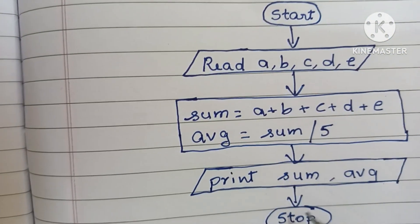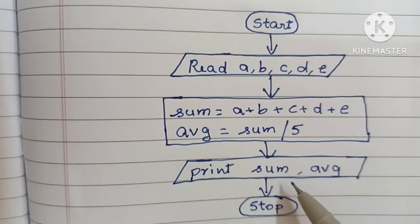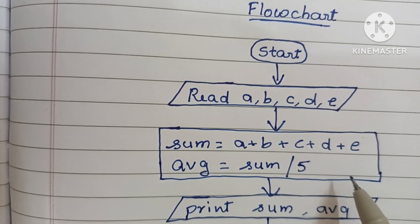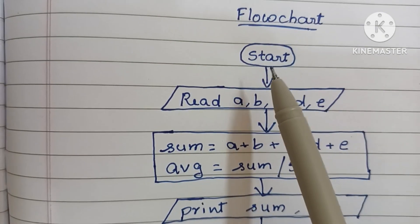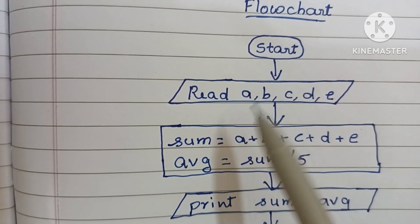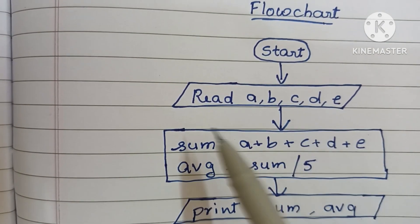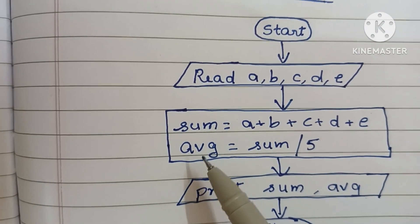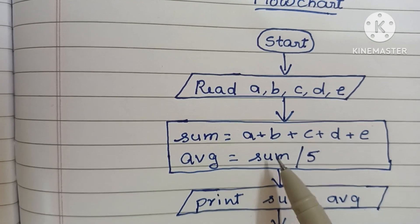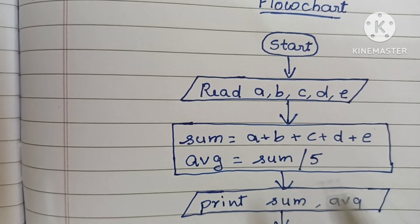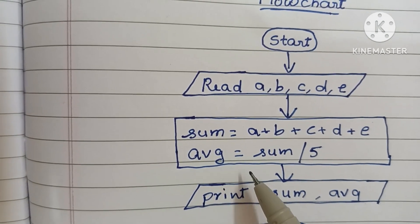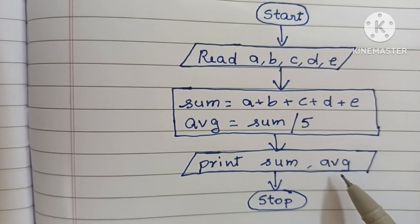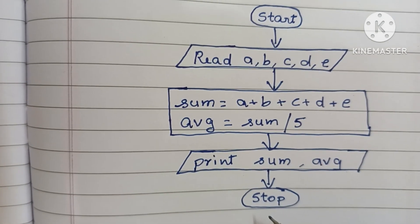To recap: start and stop statements are written within an oval shape; input and output values are written within a parallelogram shape; calculations are done within a rectangular shape. The flowchart starts with start, then read A, B, C, D, E, then sum equals A plus B plus C plus D plus E, then average equals sum divided by five, then print sum and average, then stop.